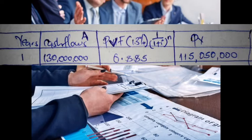For year one, cash flows are 130 million. Substituting into our formula for year one, the present value interest factor is 0.885. The present value is 130 million × 0.885 = 115 million 50 thousand, which is the present value of 130 million one year from now.